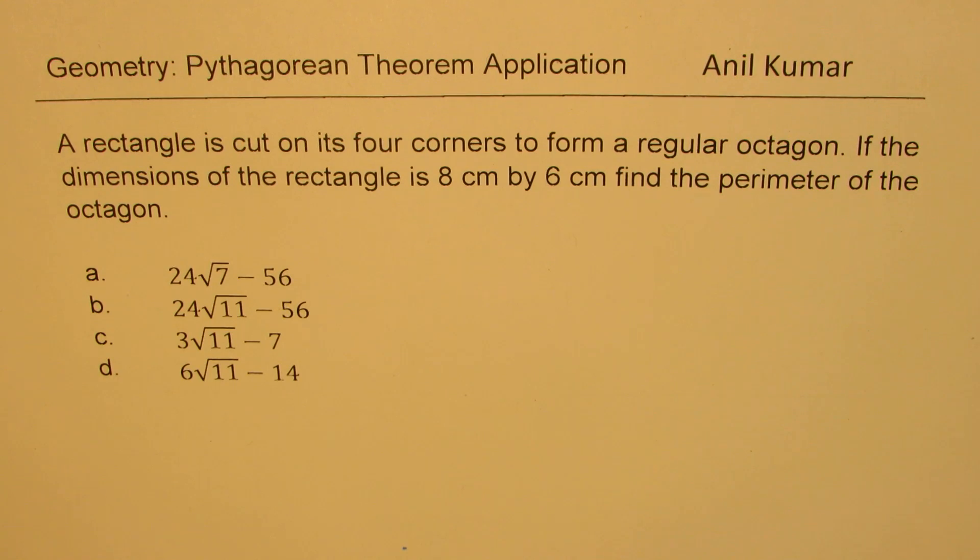A rectangle is cut on its four corners to form a regular octagon. If the dimensions of the rectangle is 8 cm by 6 cm, find the perimeter of the octagon. Four choices are given to you.